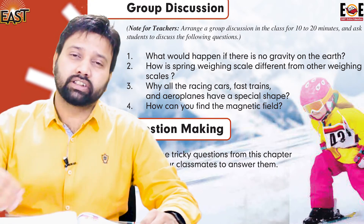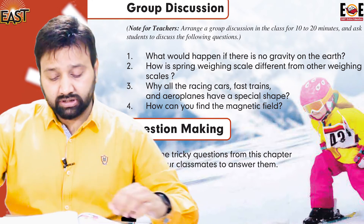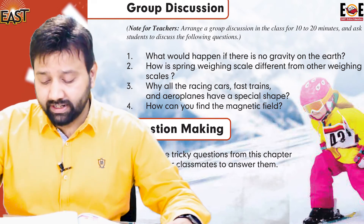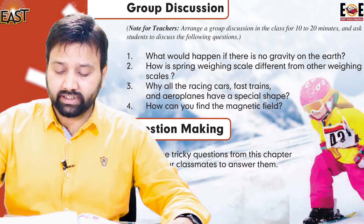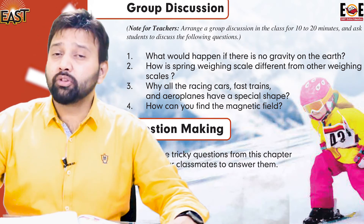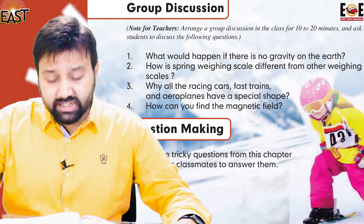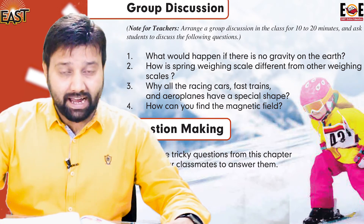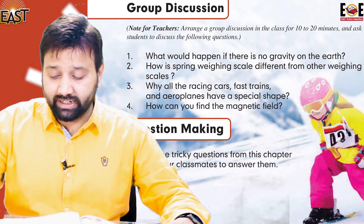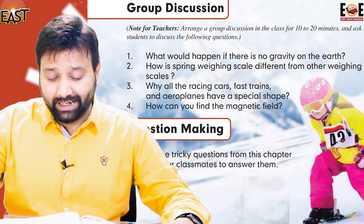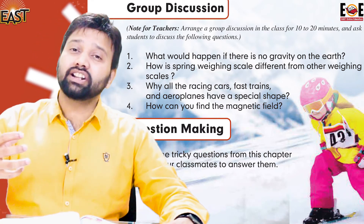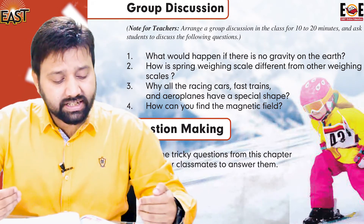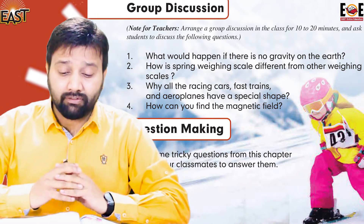Question number four: How would you find the magnetic field? The simplest way to find a magnetic field is to sprinkle iron filings around a magnet. We cannot see the magnetic field, but due to it, the iron filings will be attracted to the magnet.